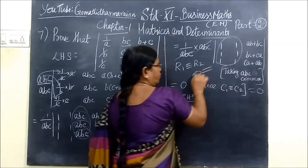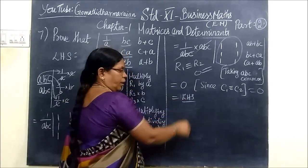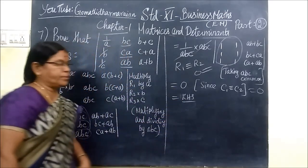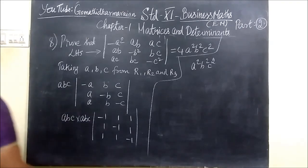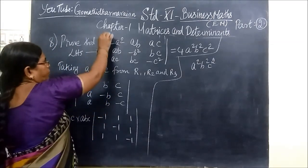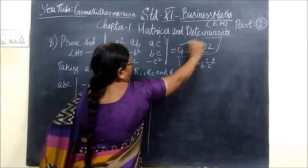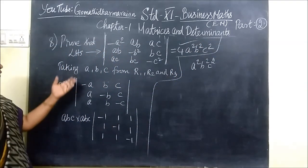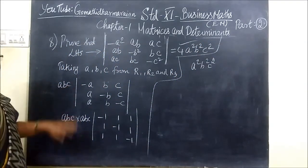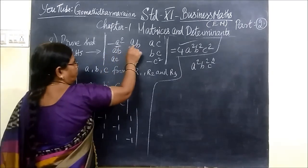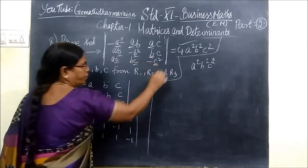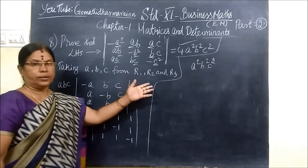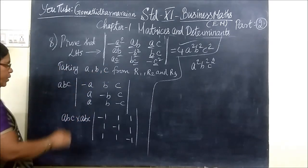The whole value is equal to 0. And we do one more sum. Now we see the next sum — prove that it equals 4A²B²C². Consider the LHS. This is a very easy sum. A common from here, B common from here, then C common from here. So from R1, R2, R3, that is A, B, C common.